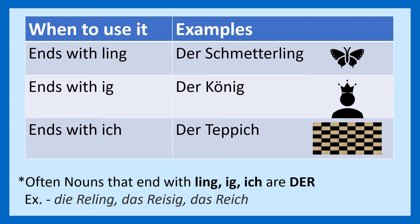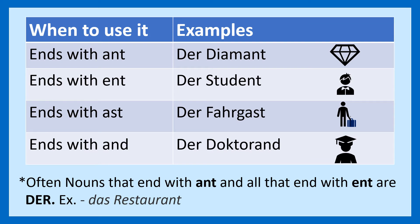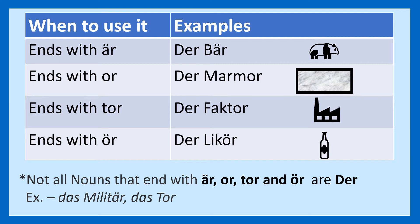Nouns ending with -ling: der Schmetterling. Ends with -ig: der König. Ends with -ich: der Teppich. Ends with -et: der Magnet. Ends with -n: der Stuhl. Ends with -er: der Koffer. Ends with -and: der Diamant. Ends with -ent: der Student. Ends with -ast: der Fahrgast. Ends with -and: der Doktorand. Ends with -er: der Ber. Ends with -or: der Marmor. Ends with -tor: der Faktor.